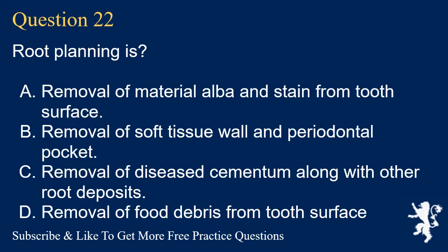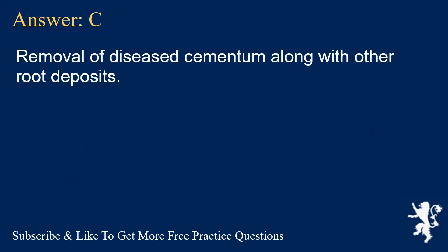Question 22. Root planning is? A. Removal of materia alba and stain from tooth surface. B. Removal of soft tissue wall of periodontal pocket. C. Removal of diseased cementum along with other root deposits. D. Removal of food debris from tooth surface. Answer: C. Removal of diseased cementum along with other root deposits.